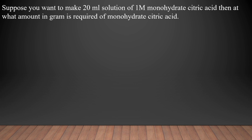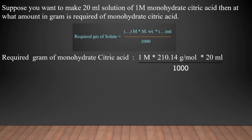What amount in grams is required of monohydrate citric acid? Using the same formula: Required grams of solute = Required molarity × Molecular weight × Required volume in ml ÷ 1000. The required grams of monohydrate citric acid for making a one molar solution in 20 ml = 1 × 210.14 g/mol × 20 ml ÷ 1000.